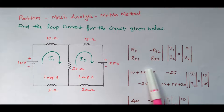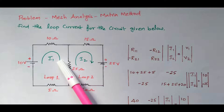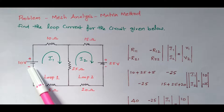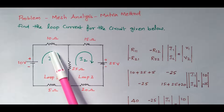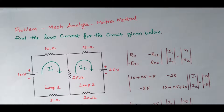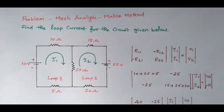Now we frame the resistance matrix. We need to find I1 and I2. The voltage in loop one is 10V. See the current direction — it is flowing in the clockwise direction. Here the current is going upward, from negative potential to positive potential, so there is a potential rise, and we take plus 10.